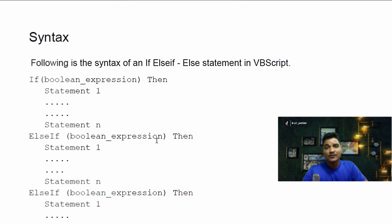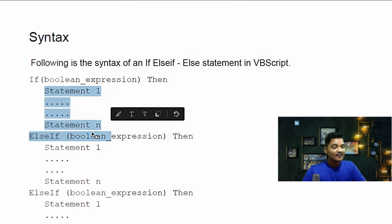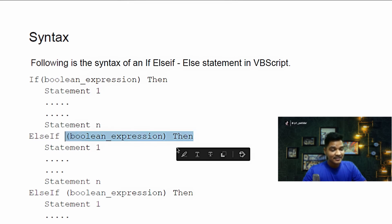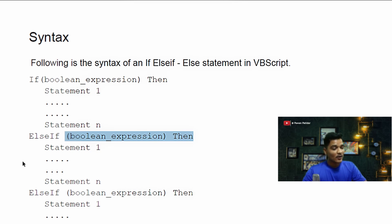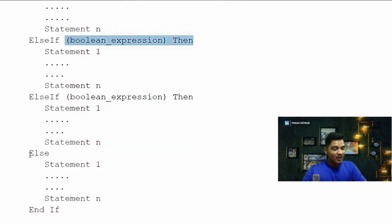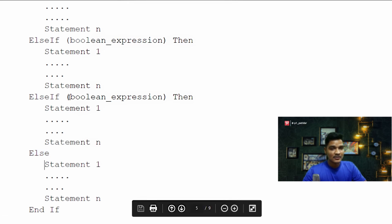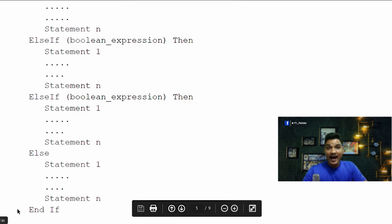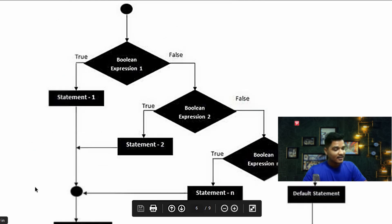What if you have to test multiple conditions and execute different code for each? First write 'If', then boolean expression, then your code. Then write another condition under 'Else If', with its boolean expression and the code to execute. In the same manner, write the last else statement — when all IF or ELSE-IF conditions fail, it executes the code under else. End the IF-ELSE-IF statement with 'End If'.